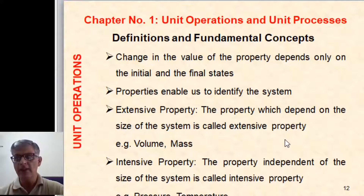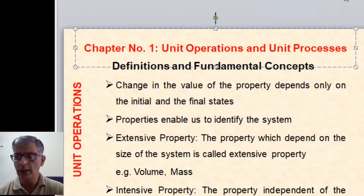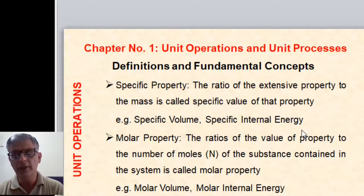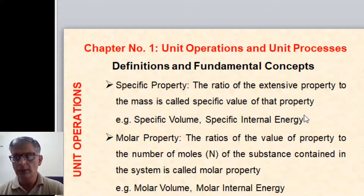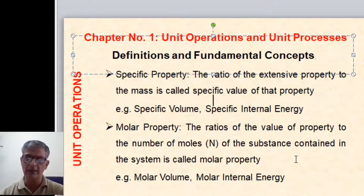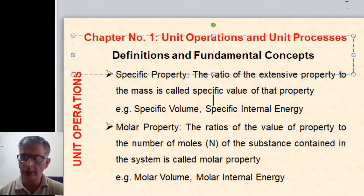The property which is independent of the size of the system is called intensive property — for example, pressure and temperature. The ratio of an extensive property to the mass is called the specific value of the property, for example specific volume and specific internal energy. The ratio of the value of the property to the number of moles of the substance is called molar property, for example molar volume and molar internal energy.